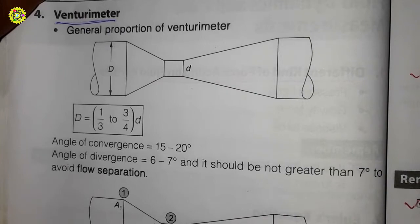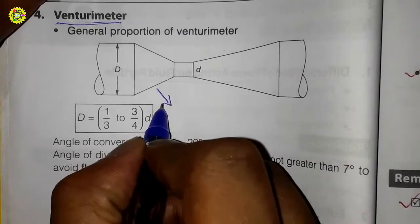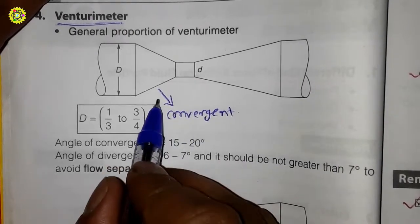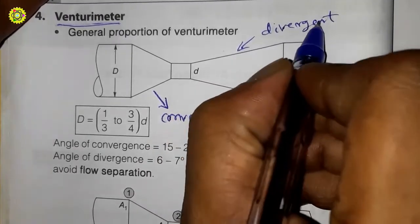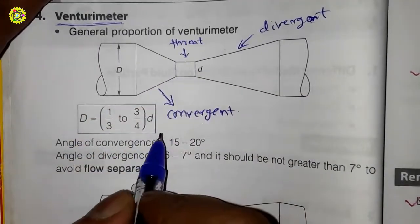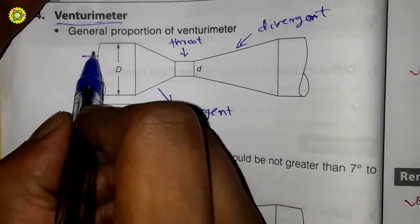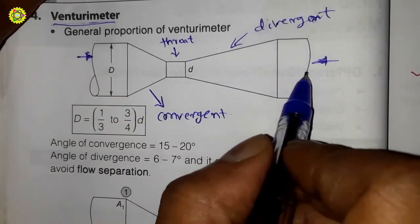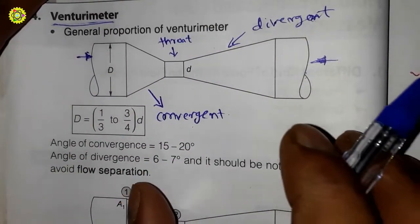This is the general arrangement of the venturimeter. This portion is the convergent portion, this portion is the divergent portion, and this is the throat. These two are our pipes, and between these we have attached the venturimeter — this is the overall general arrangement.